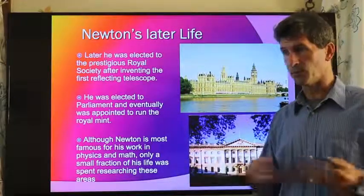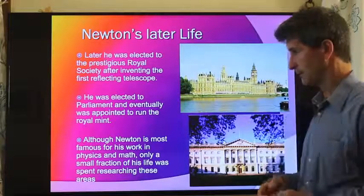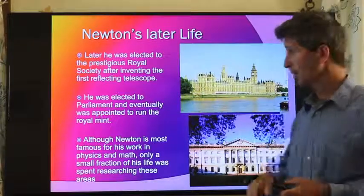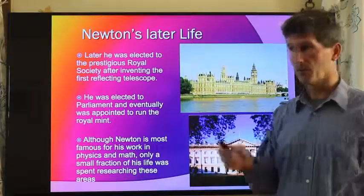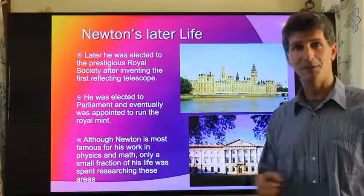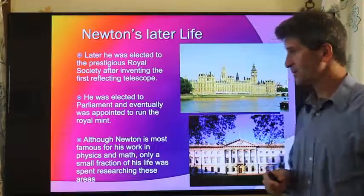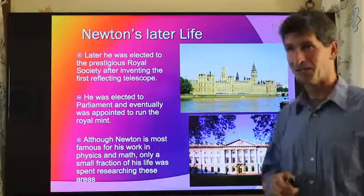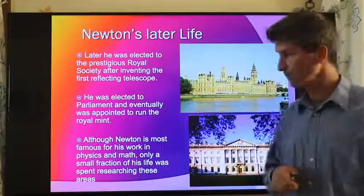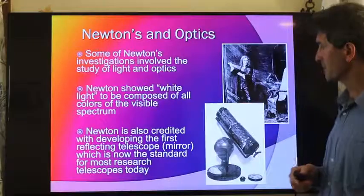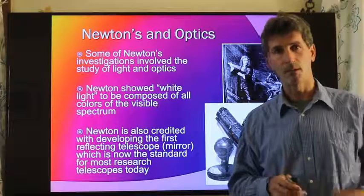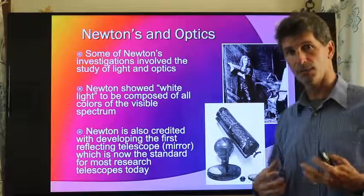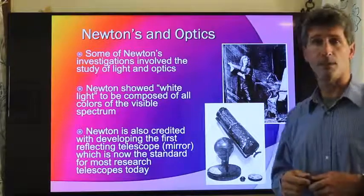But when he was appointed to the Royal Mint, he actually had a profound effect on the English economy. Most people don't know this, but at the time of Newton, counterfeiting was a huge problem. And with the economy, if you cannot be confident in the pound notes that were being sent around, that they were real, then basically the economy grinds to a halt, because nobody will pay for anything for fear that they might take in a counterfeit bill. Newton figures out how to prevent the counterfeiting, and he even finds the counterfeiter, or the person responsible for the counterfeiting, who's a member of the English government. This person was put to death for counterfeiting. His head was placed on a pike, and Newton became a hero.